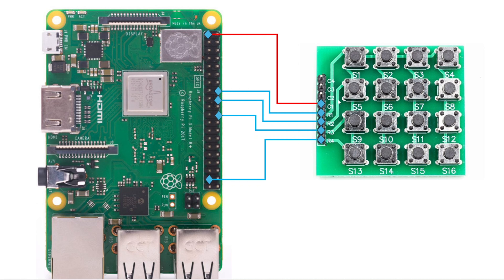Since I want to work with only four input ports, I just connect column 1 to VCC, then row 1 connects to pin 23, row 2 to pin 24, row 3 to pin 25, and row 4 to pin 26. That is how the connection works — really very simple and straightforward.